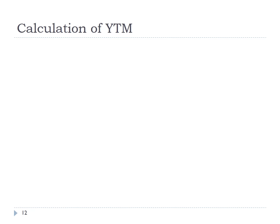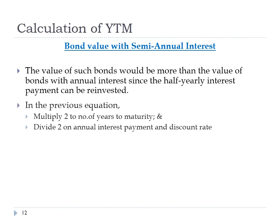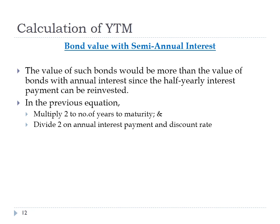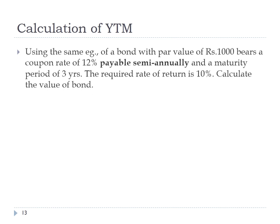Until now we have seen bonds with annual interest payments. Now we will see bonds with semiannual interest payments. These bonds fetch a higher value due to the reinvestment of half-yearly interest. To calculate such bonds, we double the term to maturity and halve both the annual coupon payment and the discount rate. The modified equation is: (C/2)/(1+r/2) + (C/2)/(1+r/2)² + ... + (C/2)/(1+r/2)^(2y) + B/(1+r/2)^(2y) = P.